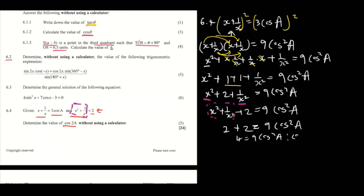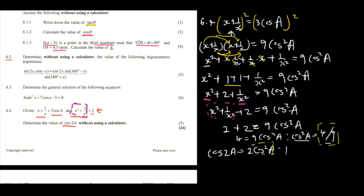Dividing by 9, we get cos²(a) equals 4/9. But we're not done yet — we need cos(2a). Using the double angle formula, cos(2a) = 2cos²(a) − 1. Substituting 4/9: cos(2a) = 2(4/9) − 1 = 8/9 − 1 = −1/9. So the answer is −1/9.